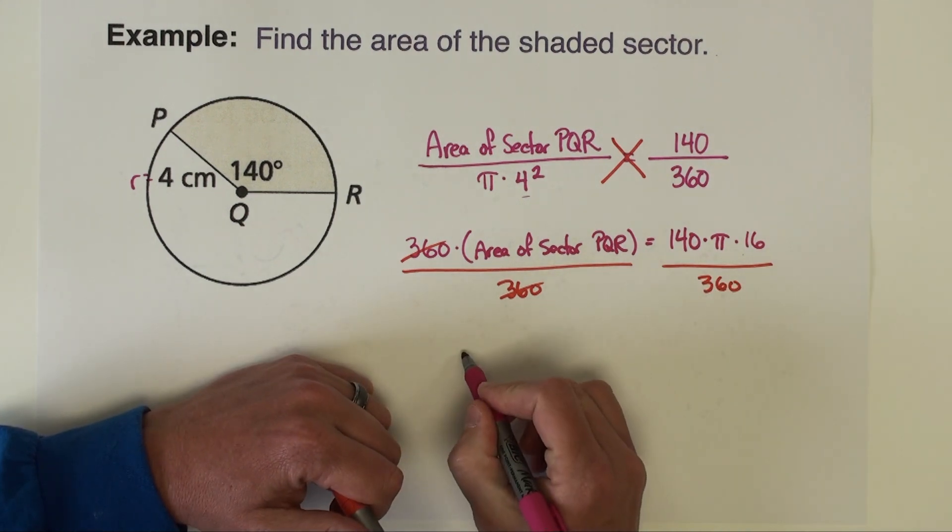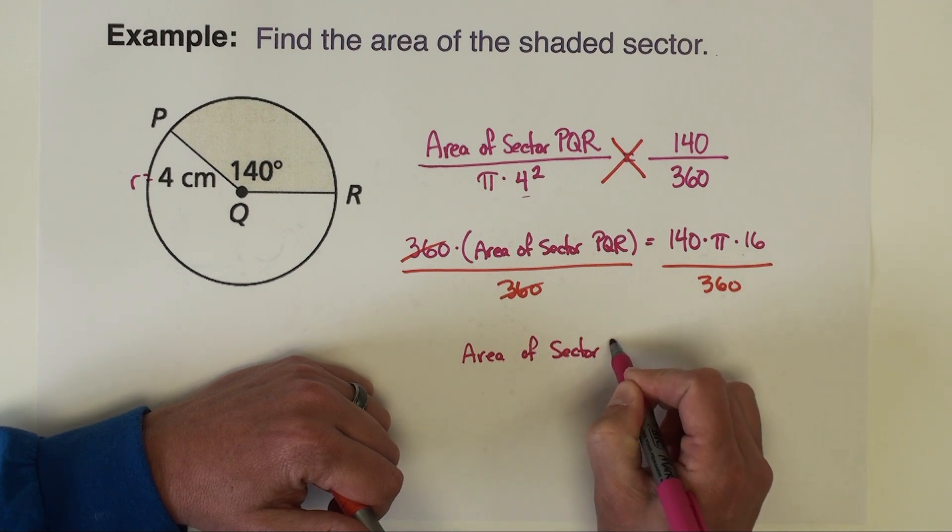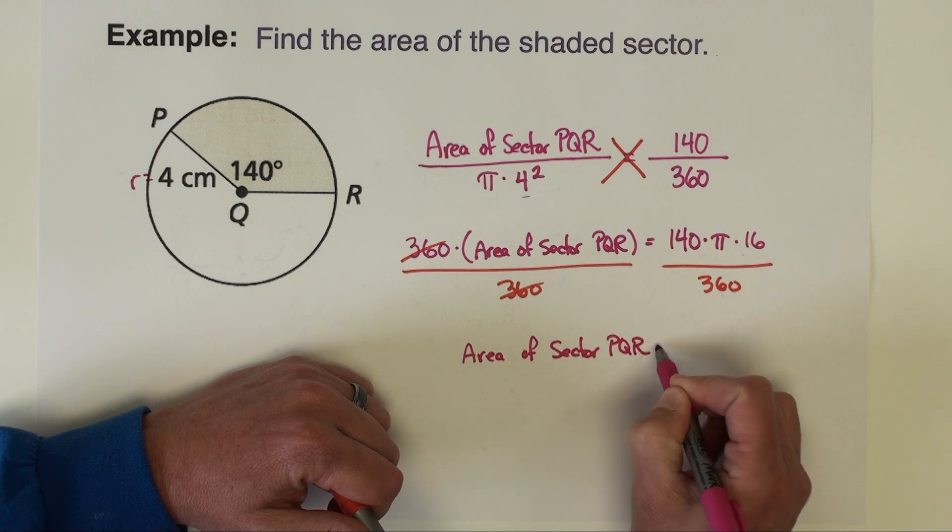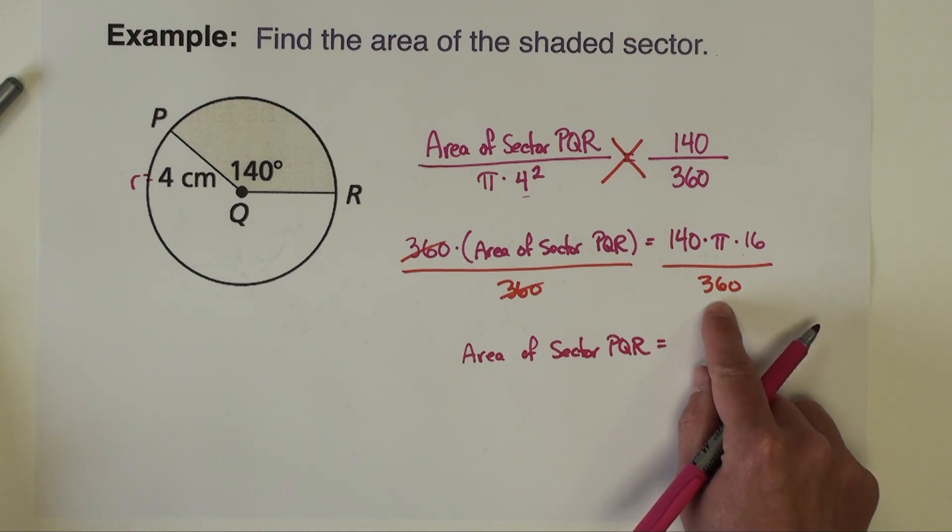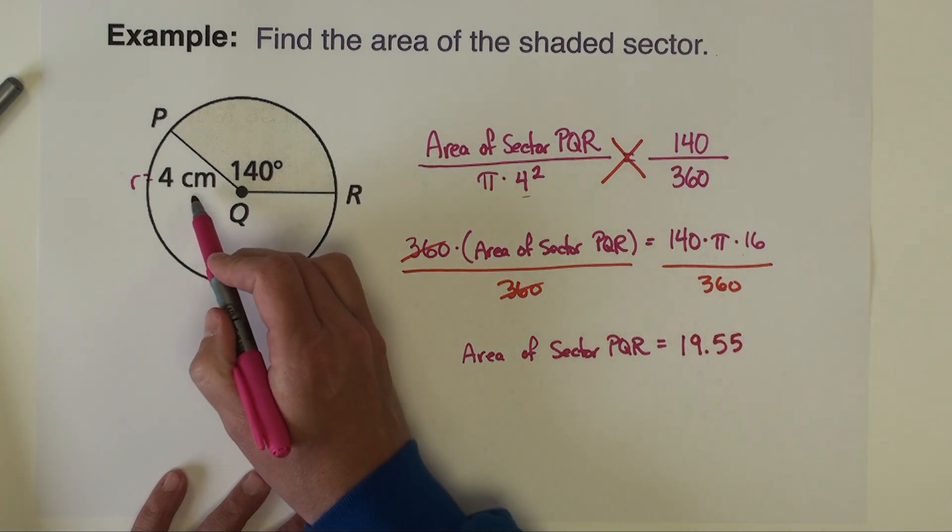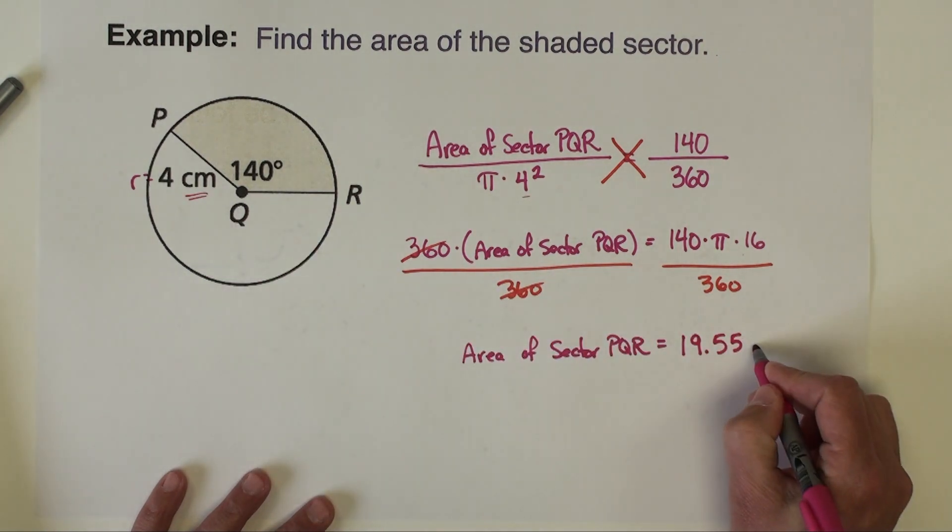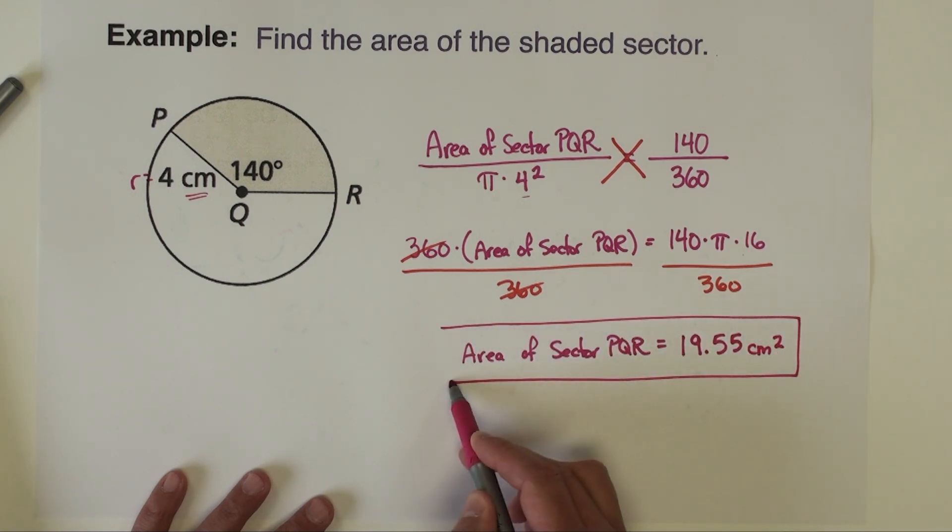And so the area of sector PQR is equal to, so let's go to the calculator and figure this out. I want 140 times pi times 16. I'm going to divide that by 360, and I get about 19.55. This is area. Units are centimeters, so we're going to do centimeters squared.